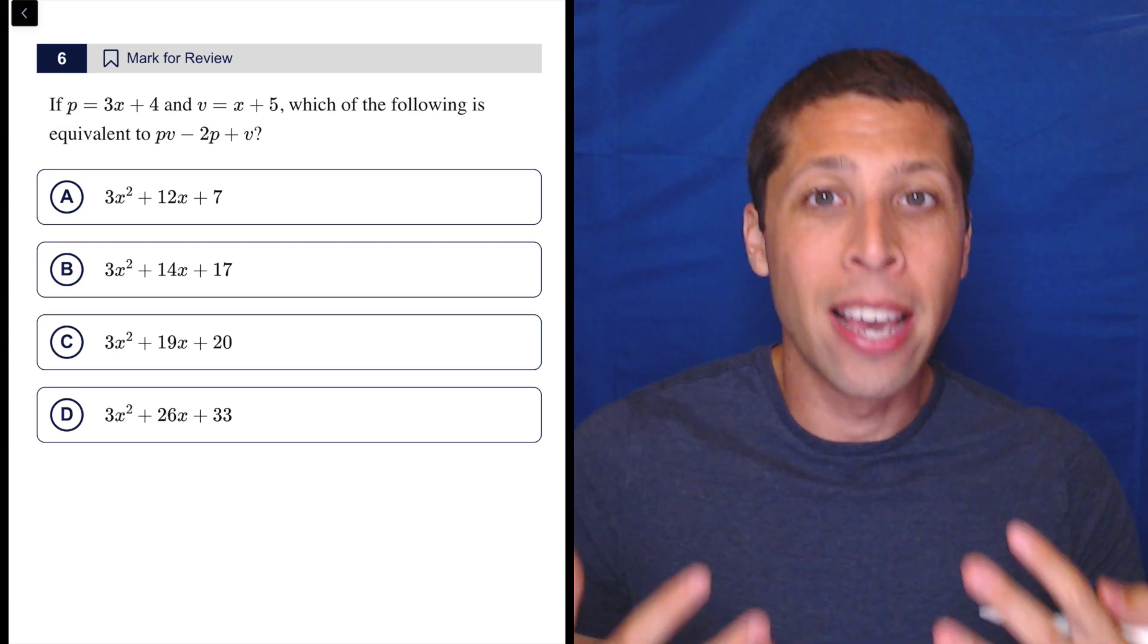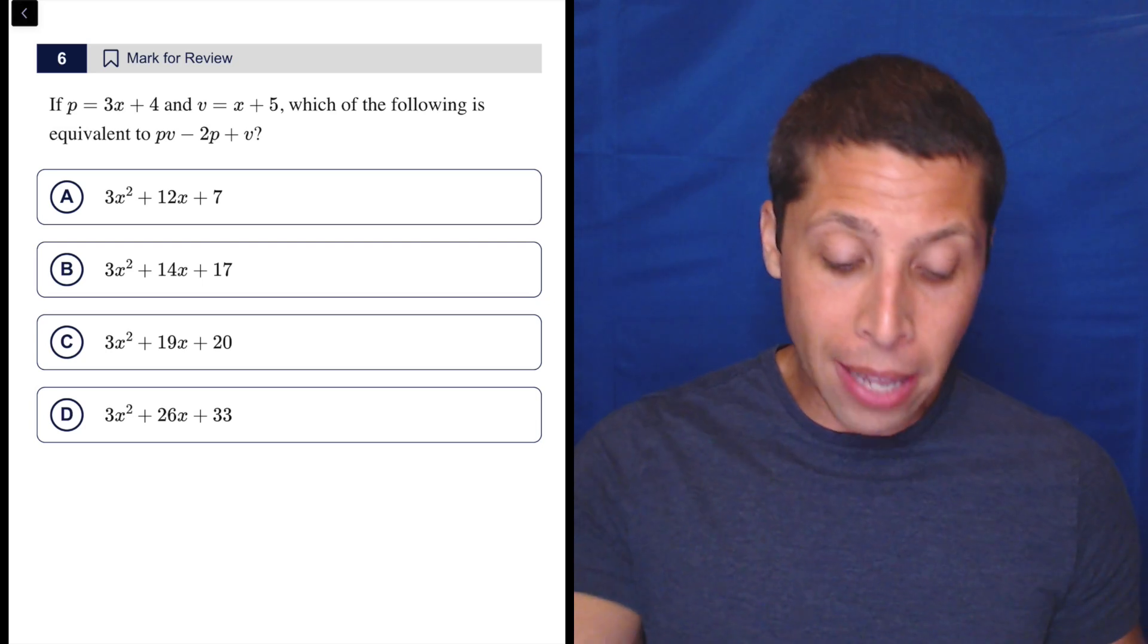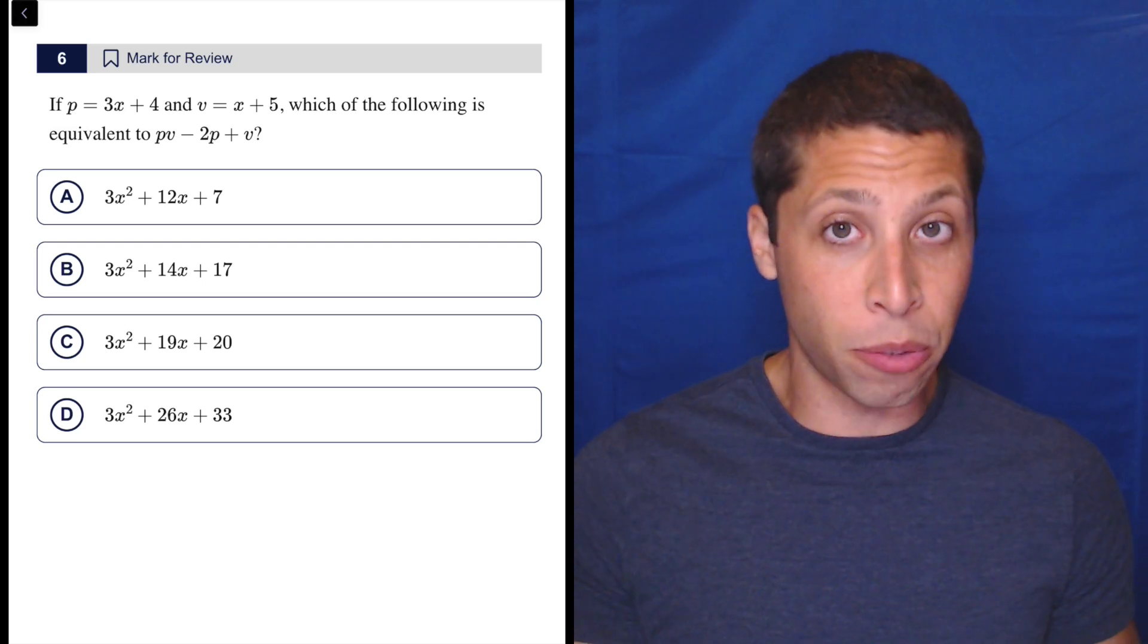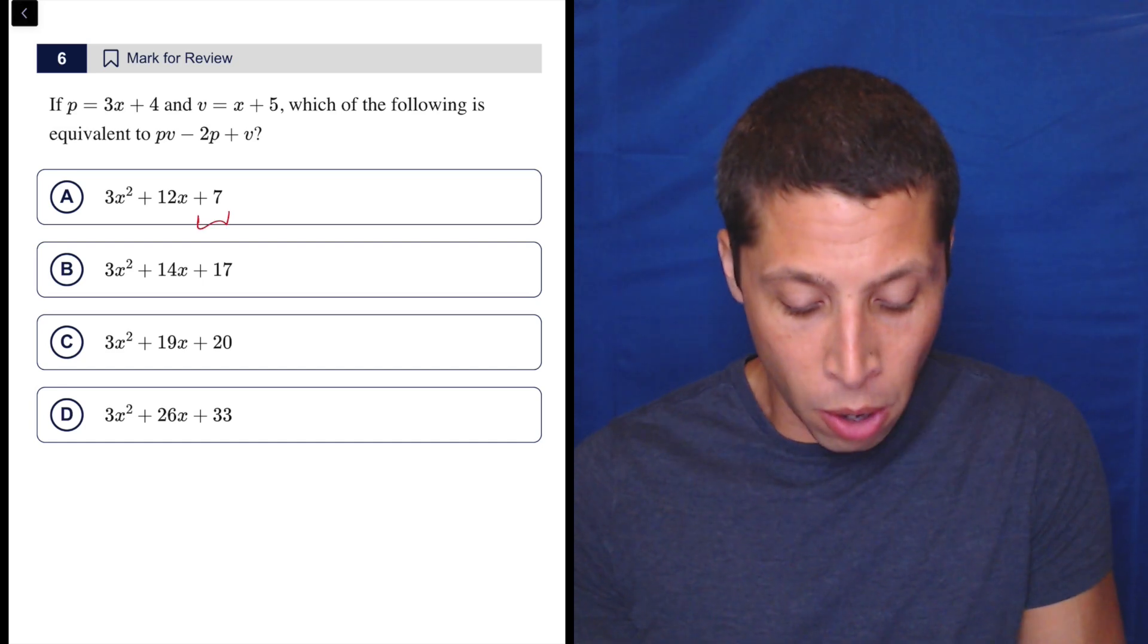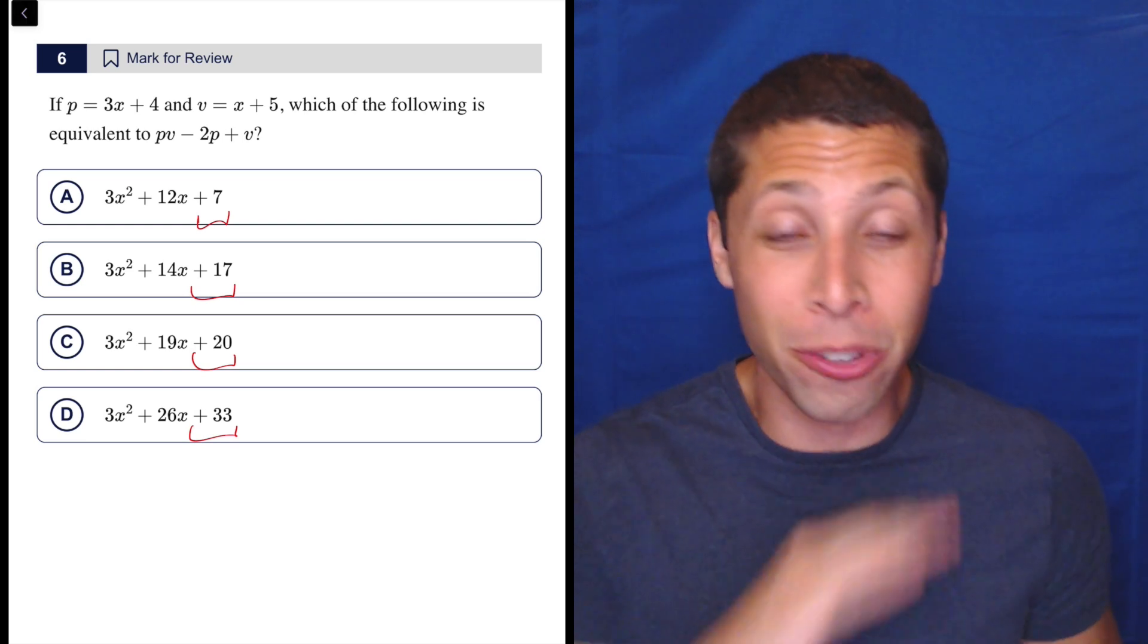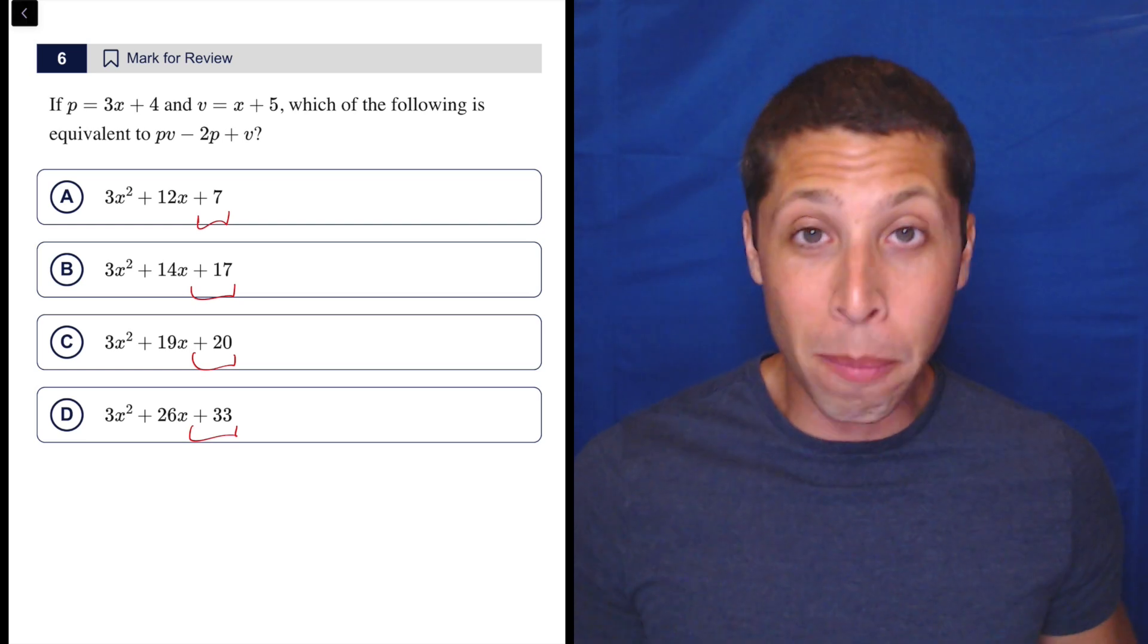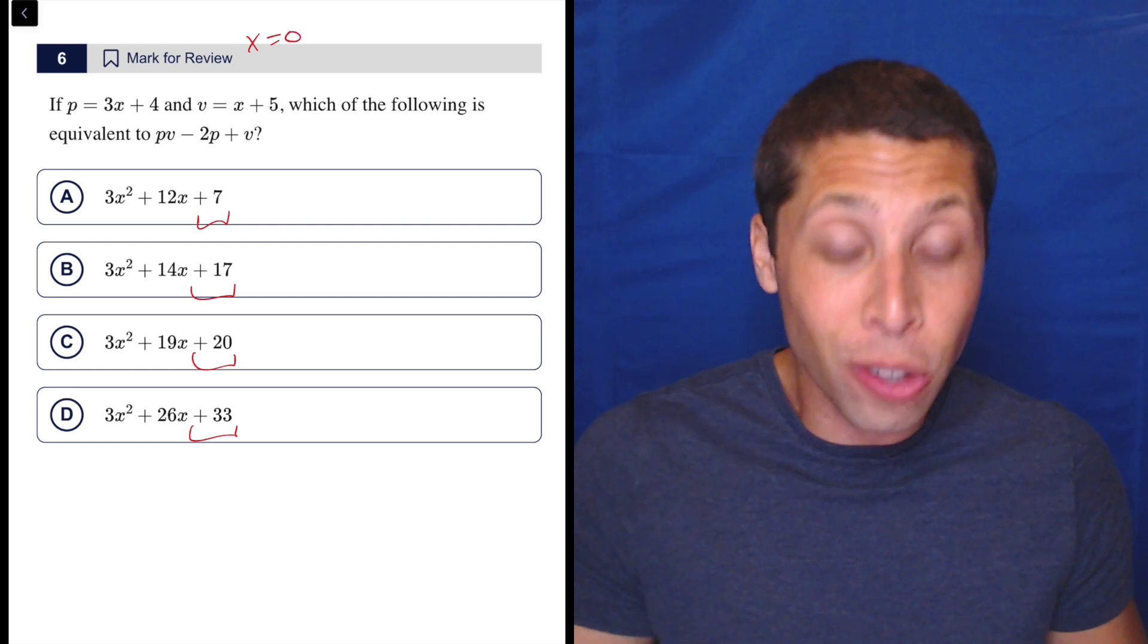So you have to sense that and be like, okay, they're messing with me. Can I get back to a place where I'm more comfortable? Plus, when we scan these answer choices, notice we keep seeing something in these questions. If we made X equal to zero, the only thing we'd be left with is these last terms, and they're all different. So X equals zero is going to get us the right answer here. Other numbers might not work out as nicely, but I'm always going to try zero if I can because it's so easy.